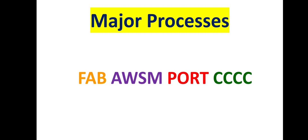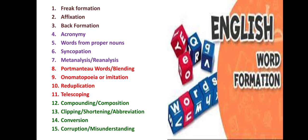FAB stands for: Freak Formation, Affixation, and Back Formation. AUSM stands for: Acronymy, Words from Proper Nouns, Syncopation, and Meta-analysis or Re-analysis. PORT stands for: Portmanteau words or Blending, Onomatopoeia or Imitation, Reduplication, and Telescoping. The four C's are: Compounding or Composition, Clipping or Shortening, Conversion, and the 15th one is Corruption or Misunderstanding.